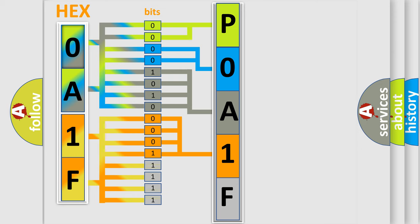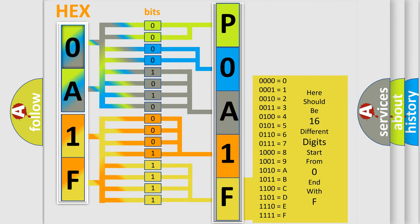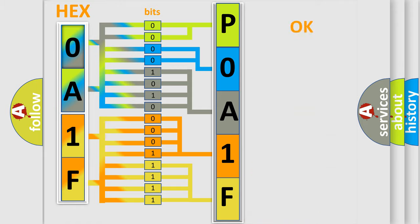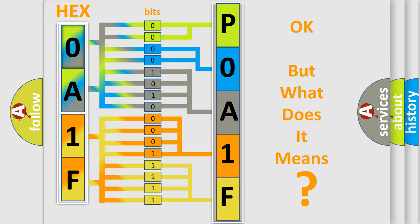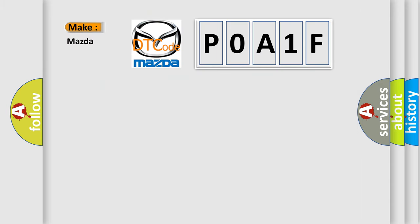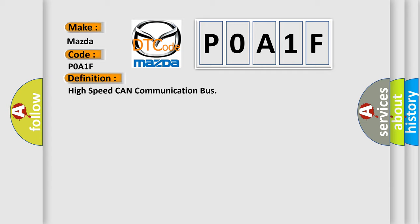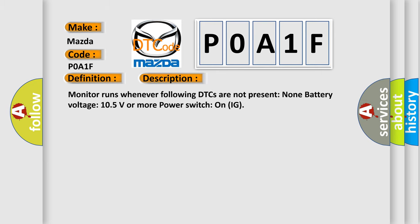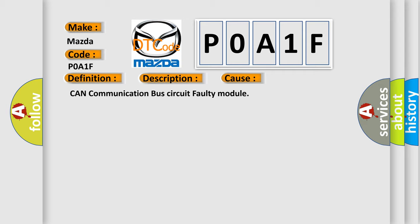A single byte conceals 256 possible combinations. We now know in what way the diagnostic tool translates the received information into a more comprehensible format. So, what does the Diagnostic Trouble Code POA1F interpret specifically for Mazda car manufacturers? The basic definition is: High-speed CAN communication bus. This DTC monitor runs whenever the following conditions are not present: battery voltage 10.5 volts or more, and power switch on IG. This diagnostic error occurs most often in these cases: CAN communication bus circuit faulty module.